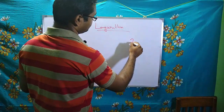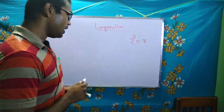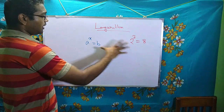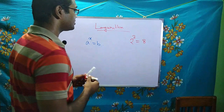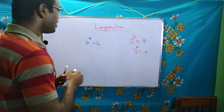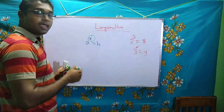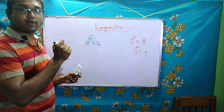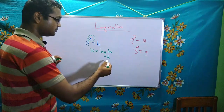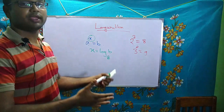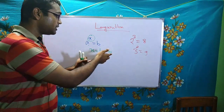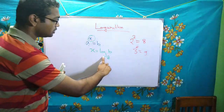Let me write one expression here: 2 to the power 3 is equal to 8. I can write it generally as a to the power x is equal to b. Comparing, a equals 2, x equals 3, b equals 8. Similarly, 3 squared equals 9, so x equals 2, a equals 3, b equals 9. In general, to express x in terms of a and b, there is a special function called logarithm: x is equal to log of b to the base a.